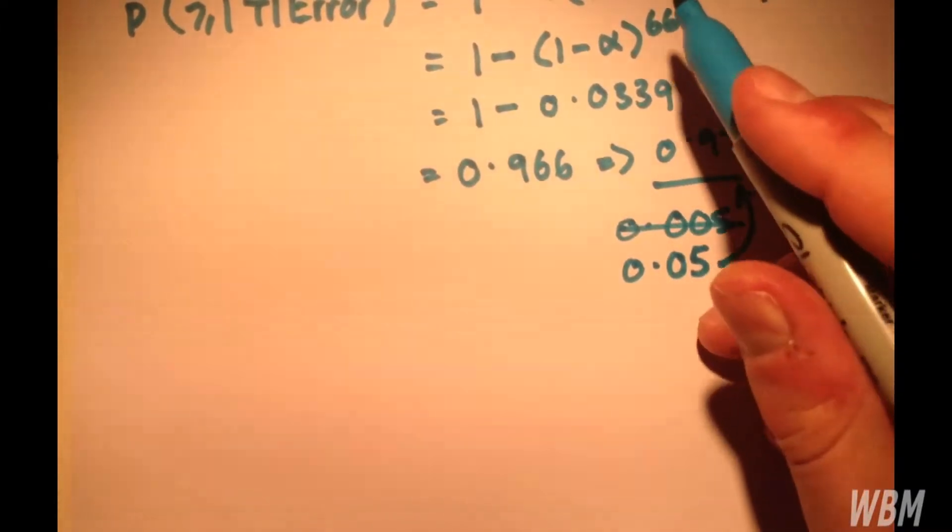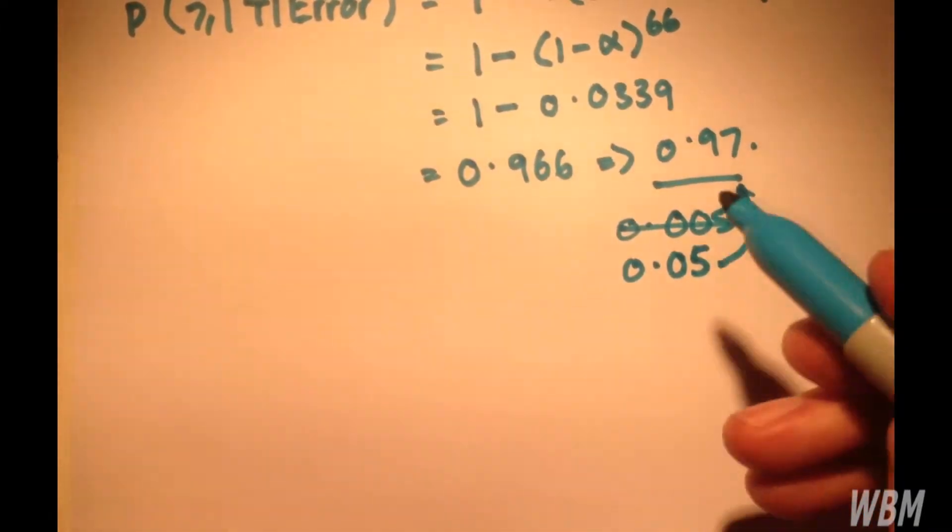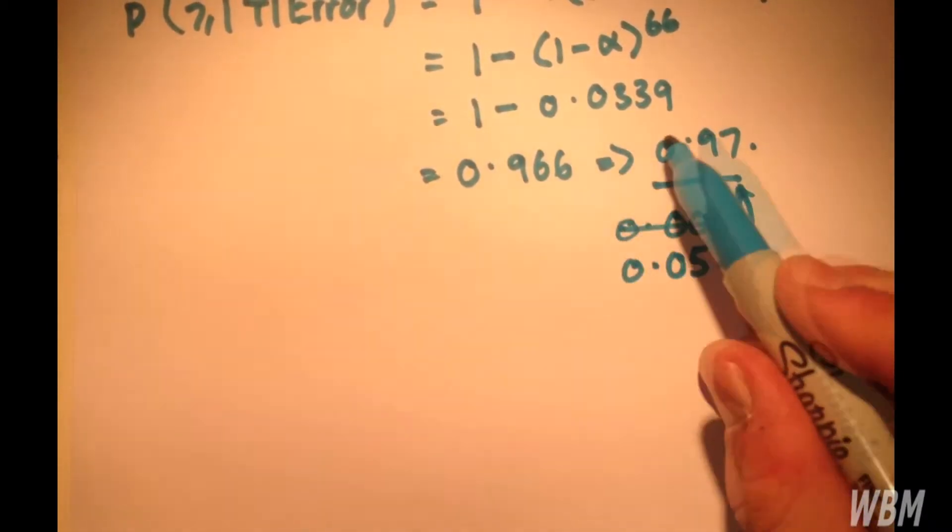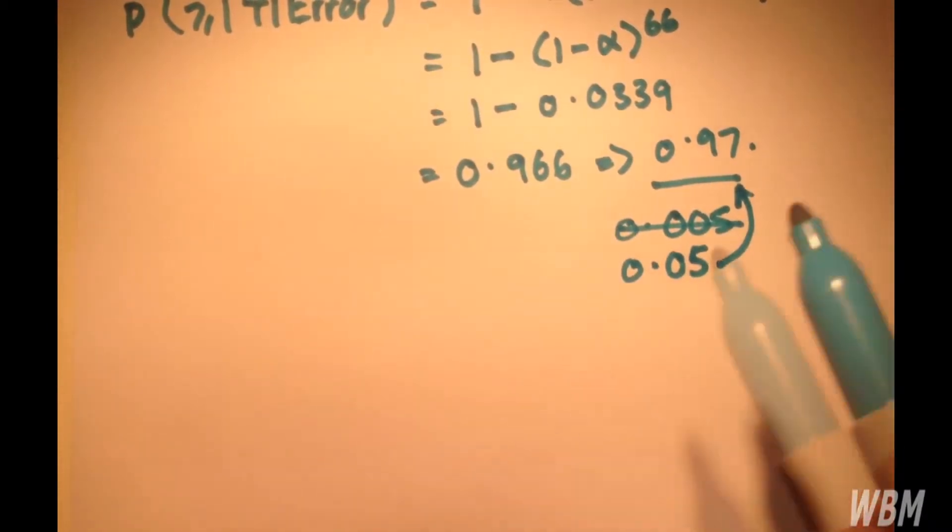So, how do we correct this? Well, if we're testing n hypotheses, and n is 66, then the probability of type 1 error is reduced,